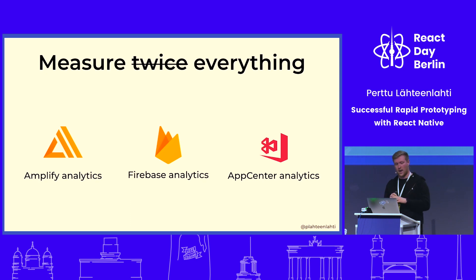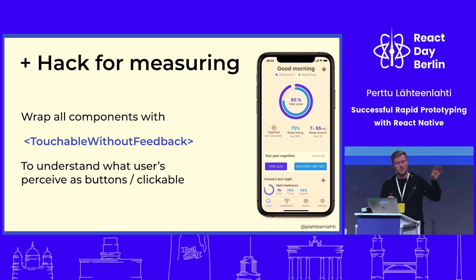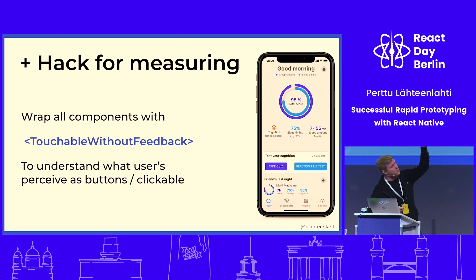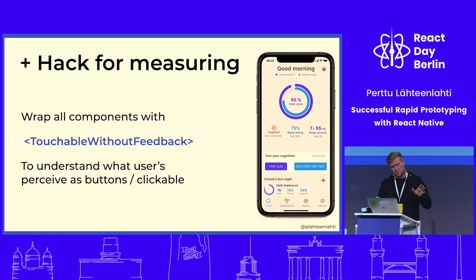There was a really nice hack we used to find hidden information: we wrapped all components that weren't supposed to be clickable with TouchableWithoutFeedback and made them emit an analytics event to our backend, to see which parts of the UI users were pressing expecting them to do something. For example, there were a couple of things about sleep timing — we had a lot of users pressing those static elements, which revealed we needed to build something allowing users to find more information about their sleep. It's a cool hack, but don't do it in production — it's bad for accessibility — but in a prototype it's fine.